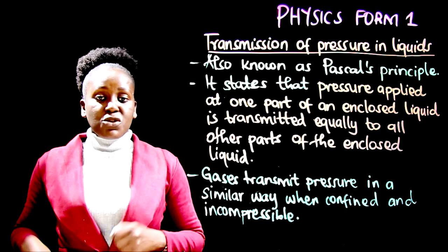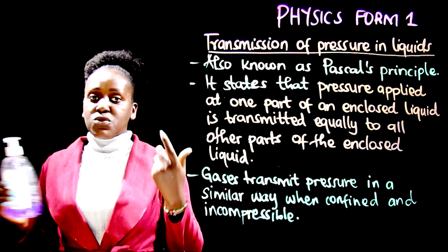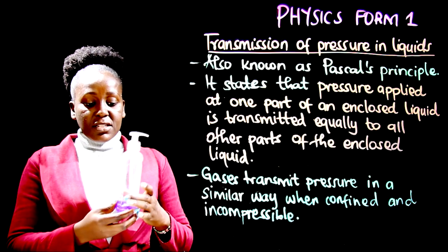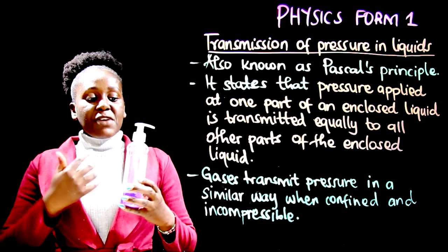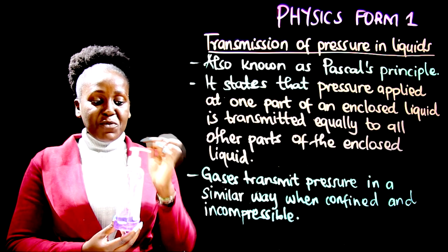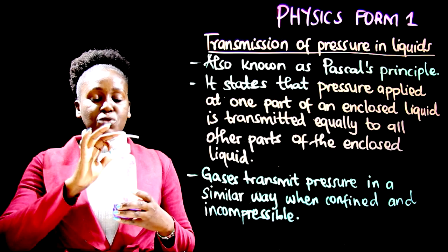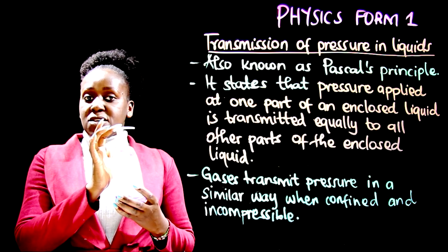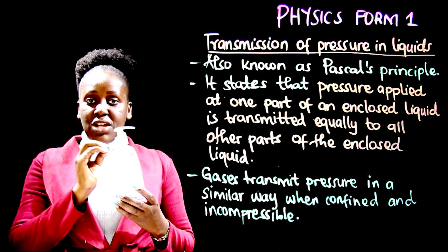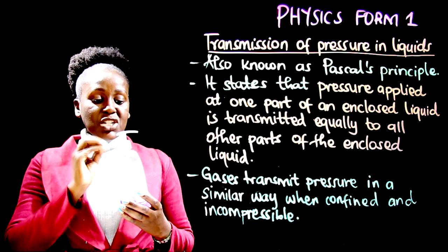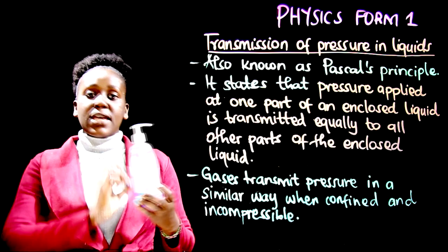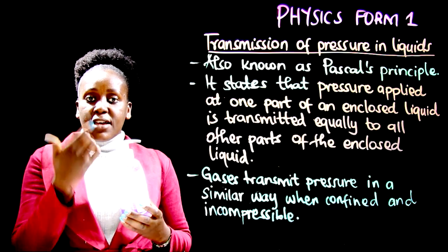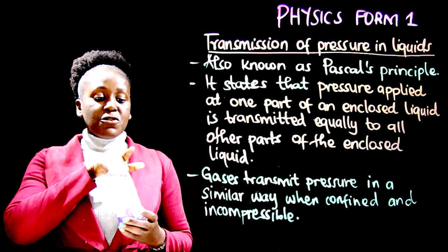Same case when you are using your soap to clean your hands. I have this soap here, and if I want to produce the soap from this tube, then I have to press at this position. When I press here, I create or rather I exert pressure. When I exert pressure, the same amount of pressure is transmitted equally to all the other parts of this tube until the liquid soap comes out.